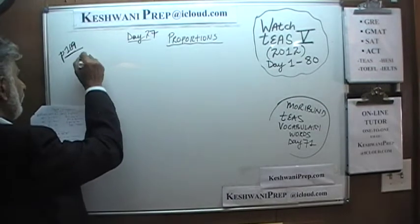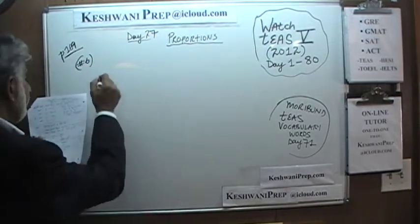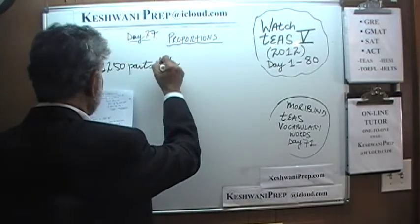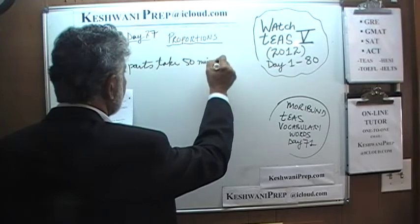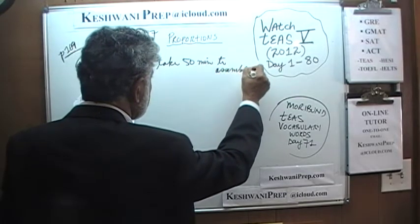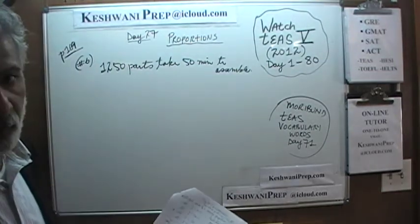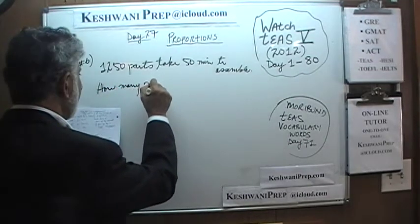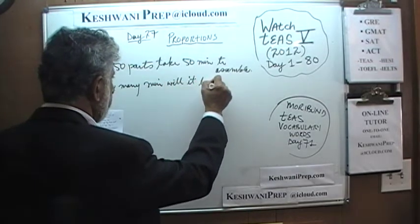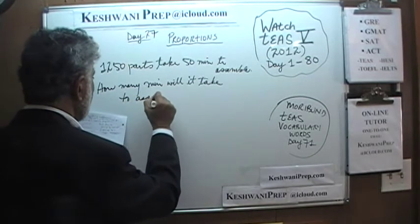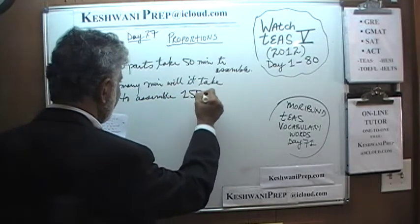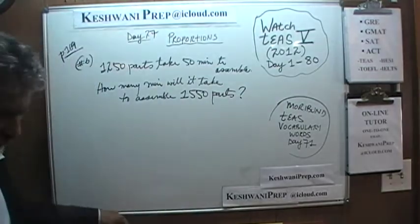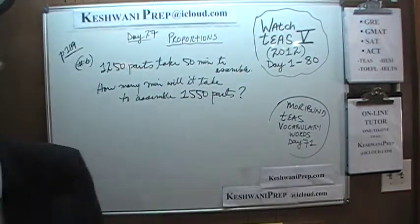What I want you to do: as soon as I finish writing the problem on the blackboard, I will give you a couple of seconds to pause and unpause the video. Solve the problem yourself first, then do it with me — you will get more out of it that way. Here is number six: we are assembling parts and we are told that we can put together 1,250 parts in 50 minutes. The question is: how many minutes will it take to assemble 1,550 parts? Go ahead and pause — do it yourself first.